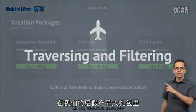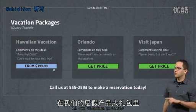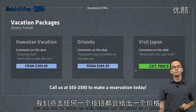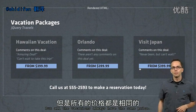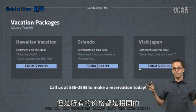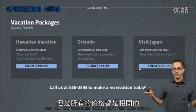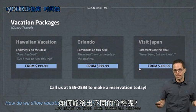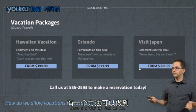Back in our demo in our vacation packages, you can see we click on each button and it gives us a price, but all the vacations always have the same price. How might we give them different prices?